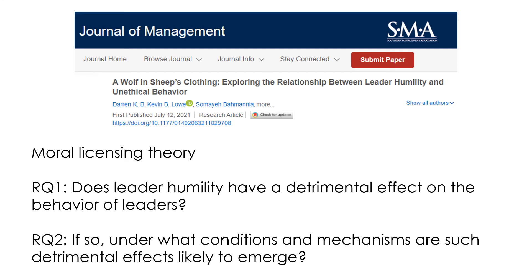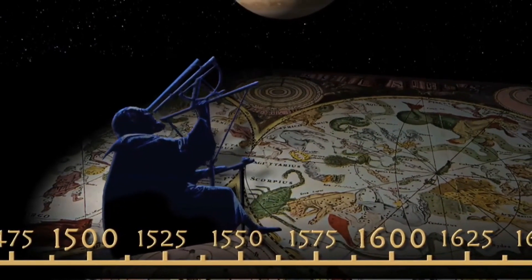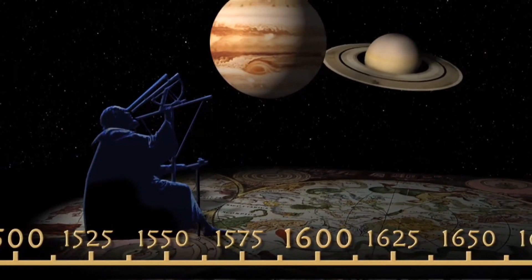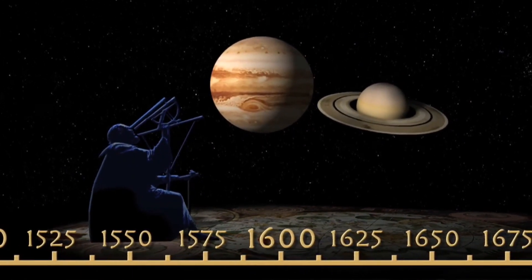To test the argument, the authors asked two research questions: first, does leader humility have a detrimental effect on the behavior of leaders? Second, if so, under what conditions and mechanisms are such detrimental effects likely to emerge? The authors collected data on leader humility, moral credits, and unethical behavior. The results supported the argument that leader humility is not all positive but has a dark side. Science is about challenging assumptions, especially well-established ones — screening facts from fiction and wishful thinking.